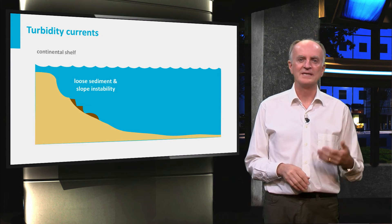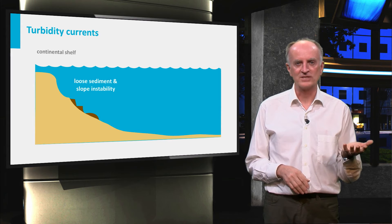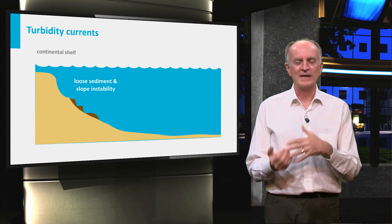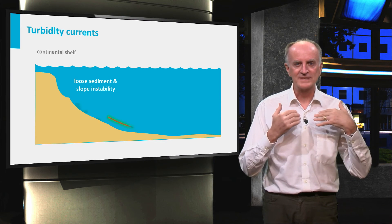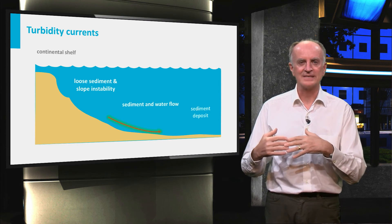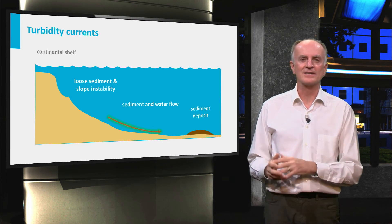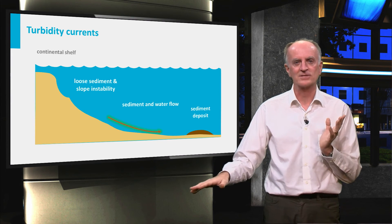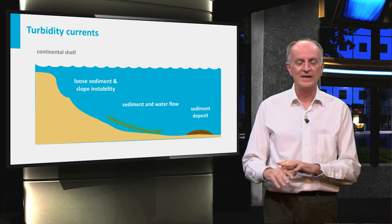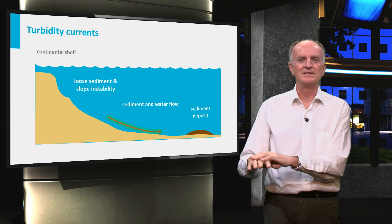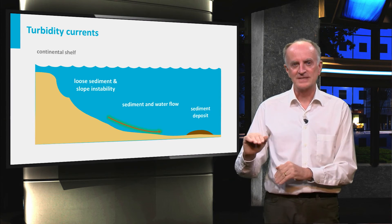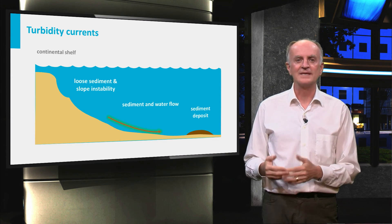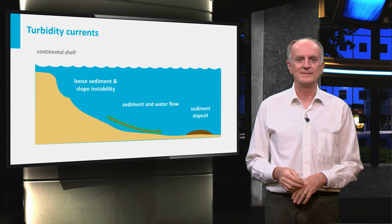Turbidity currents are generated by instabilities at the shelf and the shelf edge, by which large amounts of sediments are mobilized. Loaded with the sediments, the turbidity current has a density larger than the surrounding water mass and can therefore travel fast along the slope. Eventually, when it reaches the abyssal plane, the gradient decreases and the section increases, resulting in a lower velocity. This leads to the deposition of the sediments.